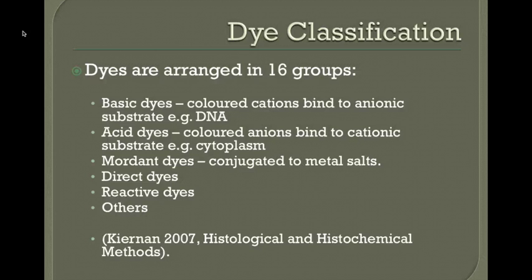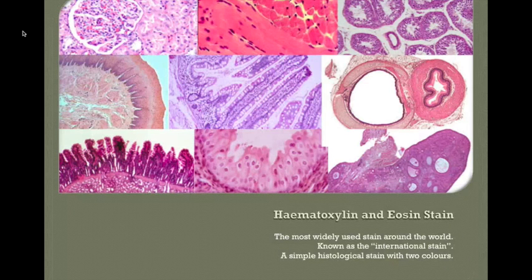A positive basic dye binds to a negative substrate like DNA. Acid dyes work the other way — a coloured anion binds to a positively charged substrate like an amino acid or cytoplasm. Also commonly used are mordant dyes, which contain metal salts and are of particular importance in the lab.